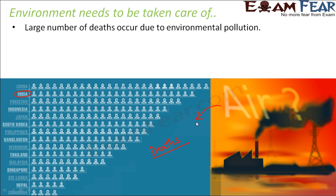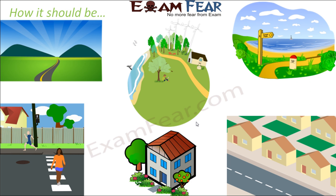Air pollution is not the only type of pollution. You also have water pollution, where water gets polluted; soil pollution, where the soil gets polluted. Each of these forms of pollution causes disaster and huge loss to living organisms.